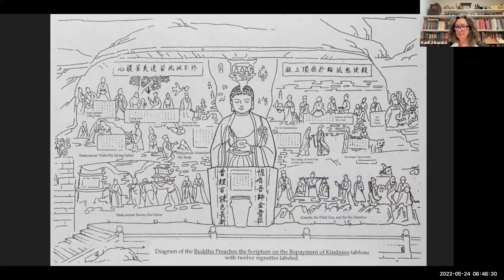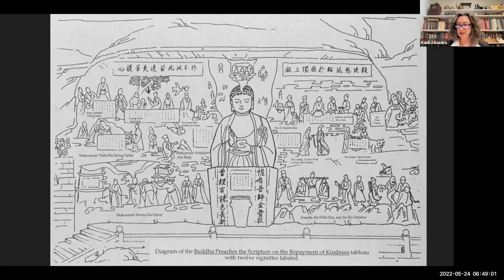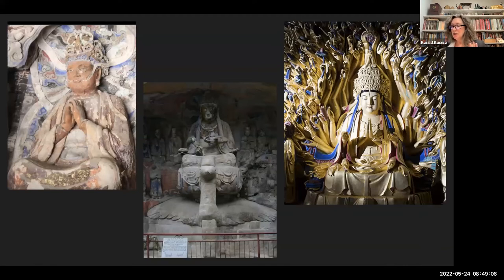Moving on to what else is at the site: the text and image interplay, which is what we're really interested in here. We have to think about what the primary textual sources are. To my mind these include only those texts that we can logically assume were integral to the construction of the site, given their incorporation visually into the various tableaux, plus the secular inscriptions — of which there are very few — dated to the Song Dynasty construction of the site.